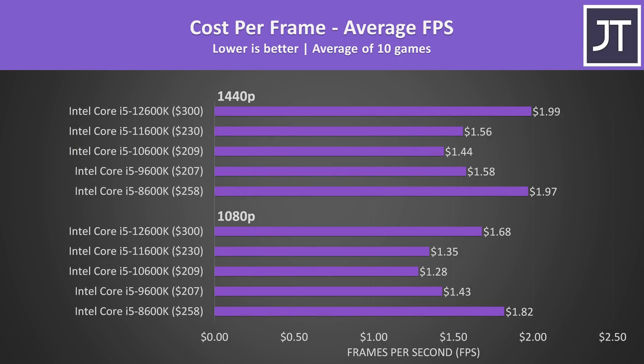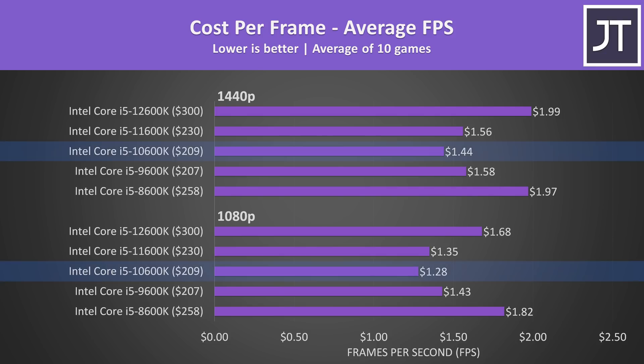Factoring in current prices at Newegg, the oldest 8th gen i5-8600K is actually the worst value at 1080p because it's the second most expensive at $258 USD — generally the case with older CPUs when stock becomes limited. The 10th gen 10600K was offering the best value at both resolutions. 11th gen and 12th gen generally perform better, but you pay more. And this only accounts for the processor — it's a different story factoring in a new motherboard and RAM, since 12th gen also requires Z690.